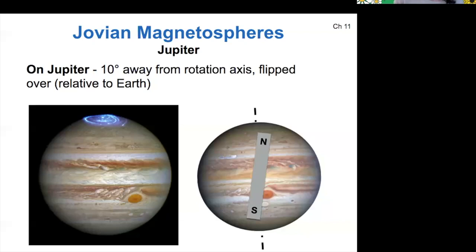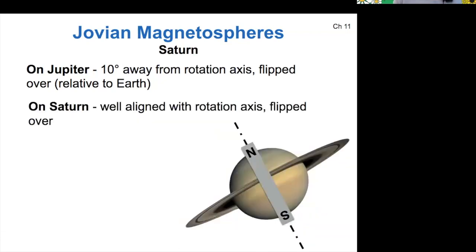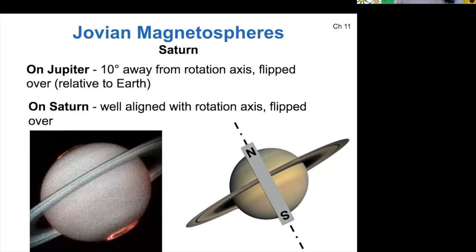Let's look at all the other magnetospheres. How do they line up and what orientation are they in? On Saturn, the north pole is at its north geographic pole, and the alignment is basically right on top of its rotation axis. But again, it's flipped over relative to Earth, and Saturn also experiences aurora.